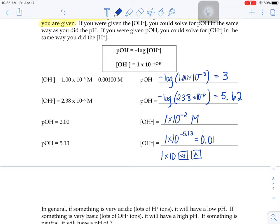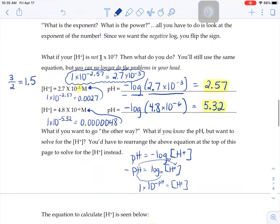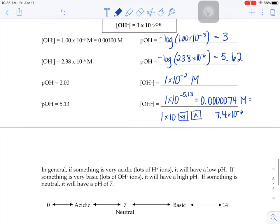So you might get one with 1, 2, 3, 4, 5 zeros, and then a 7.4, or 7.4 times 10 to the negative 6th. These are the exact same answers.